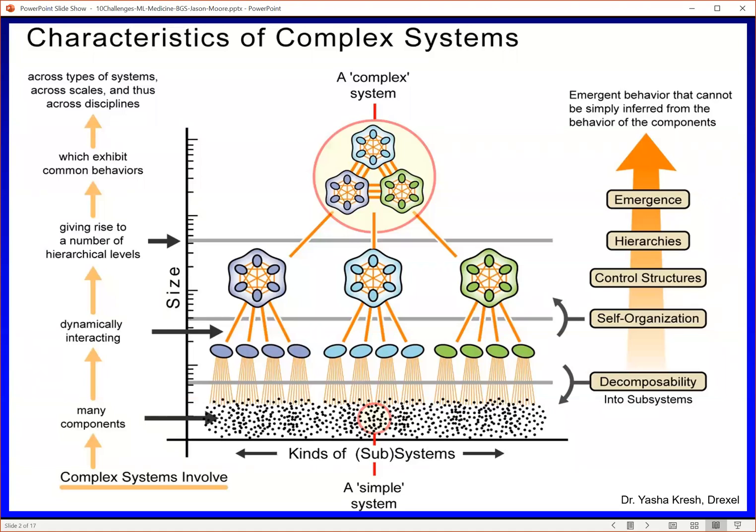I see human health very much as a complex adaptive system. At the bottom of this figure, we have many components. Think of these as genes, proteins, metabolites, microbes, environmental factors. All of these factors interact in time and space and produce what are called control structures.